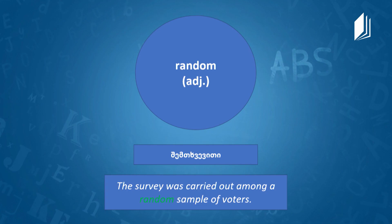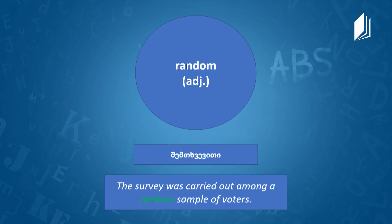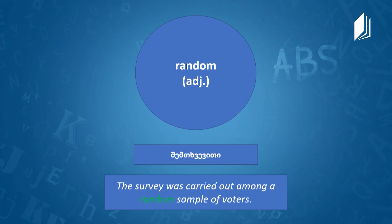The next word is 'random' — it's an adjective. Random means something that happens, is done, or is chosen by chance rather than by a plan. Example: 'The survey was carried out among a random sample of voters' — they were randomly chosen, without any kind of preparation or plan.